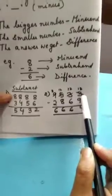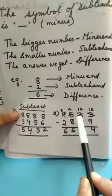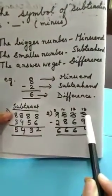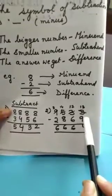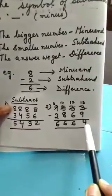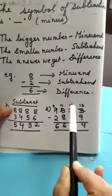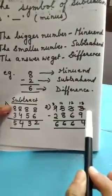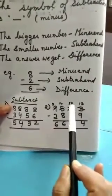So, 3, we will take as 13. We will borrow one number from here. That is 13. 13 minus 9, 4. This 3 will become 2. Because we have given one number. So, 3 will become your 2.